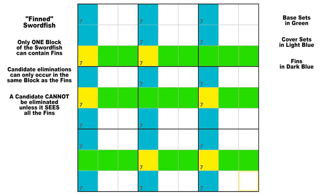Here we have a basic swordfish with the base sets in rows 3, 5, and 8. As you can see, there are only two instances of candidate 7 in each of the base sets, and they line up perfectly so that the three cover sets intersect with them to contain all of the base candidates.